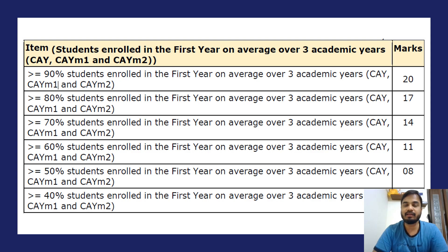The marks breakdown continues: greater than or equal to 80% scores 17 marks; greater than or equal to 70% scores 14 marks; greater than or equal to 60% scores 11 marks; greater than or equal to 50% scores 8 marks; and greater than or equal to 40% scores 5 marks.